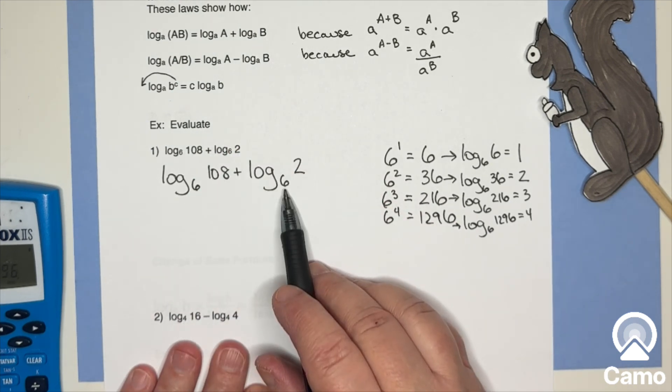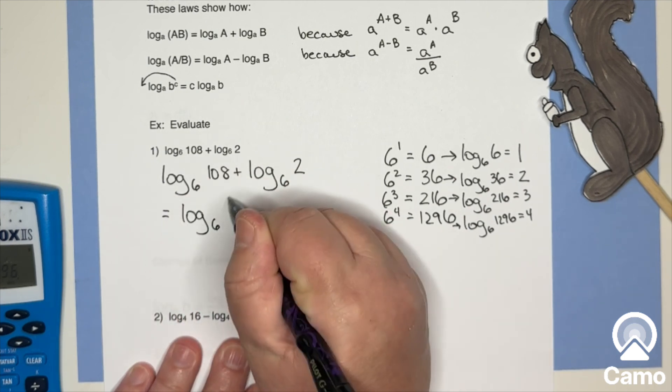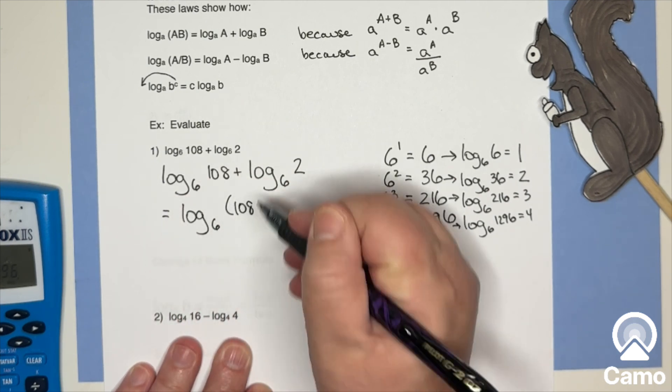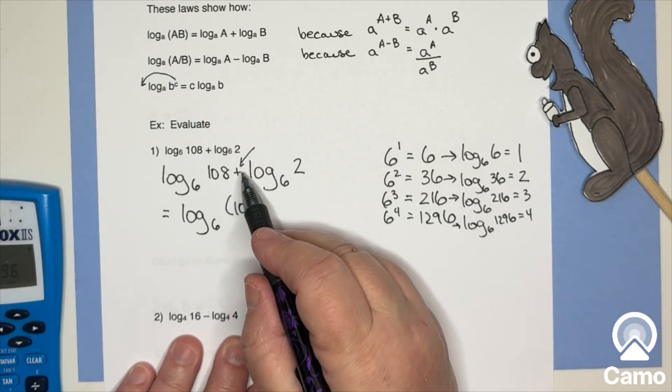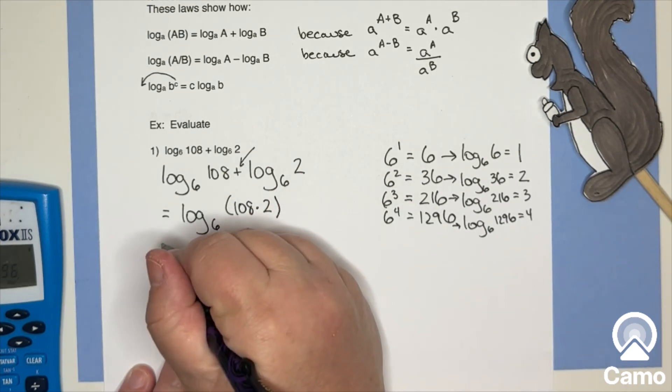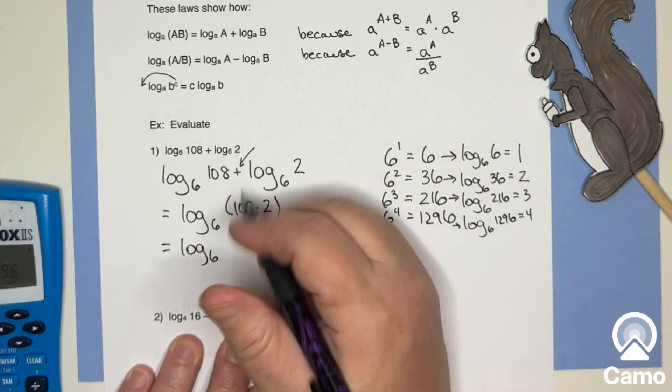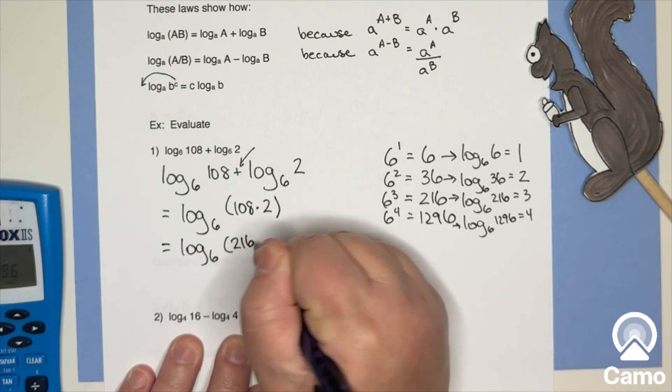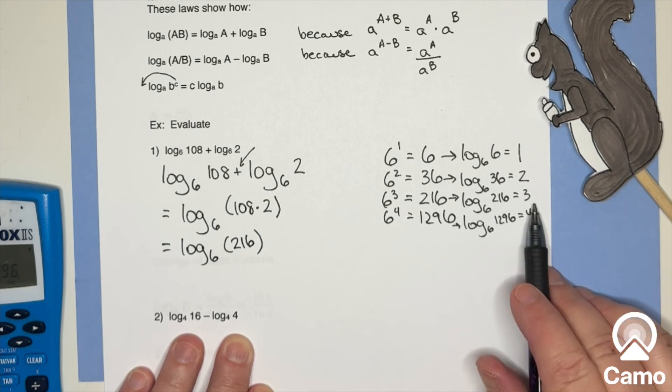So what do I do here? Both log base six. So this is equal to log base six of 108. And since it's added here, it's going to be multiplied there. And how does this help us? Well, log base six of 108 times two is 216. Log base six of 216 is three.